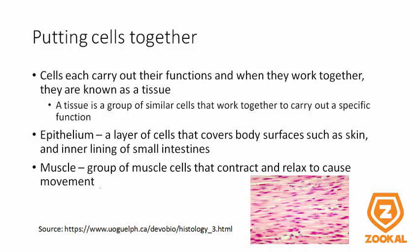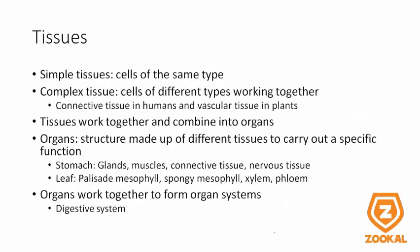Cells each carry out their functions and when cells work together, they are known as a tissue. A tissue is a group of cells that work together to carry out specific functions. For example, the epithelium is a tissue — a layer of cells that covers body surfaces such as skin and the inner lining of the small intestines. The muscle is another tissue, a group of muscle cells that contract and relax to cause movement. Each nucleus represents the nucleus of a muscle cell, and all of these muscle cells work together to form a muscle tissue and allow contraction. Simple tissues are cells of the same type, while complex tissues are cells of different types working together, for example connective tissue in humans and vascular tissue in plants.